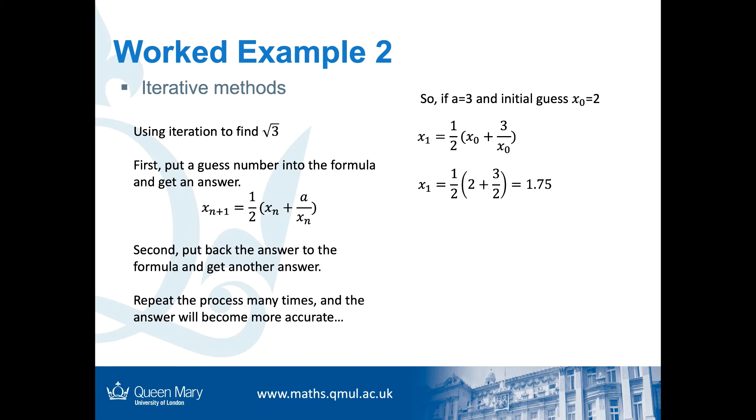And then, we repeat the formula and get x₂ = ½(x₁ + 3/x₁) = 1.732. And then, we repeat the process to get x₃. And finally, if we keep going like this, we can get closer and closer to the exact solution. This is how we find the square root of an integer.